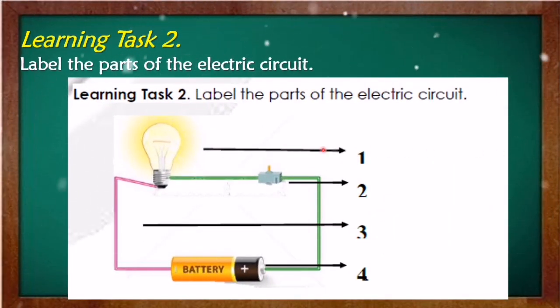This is learning task number two. Label the parts of the electric circuit. This is easy. Number one. As you can see, what is that? Number two. Number three. And number four.